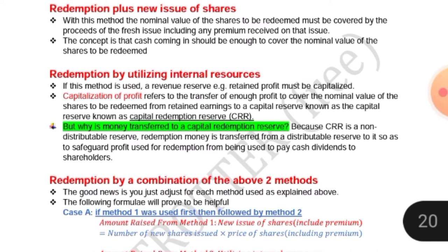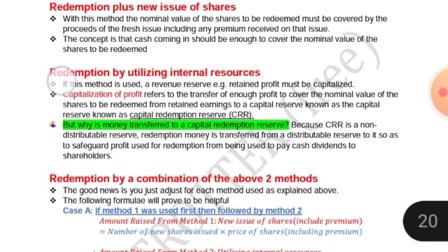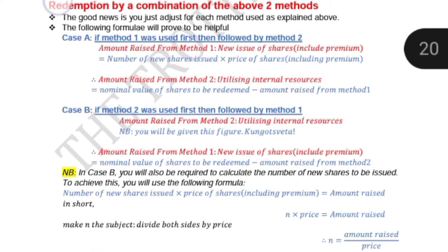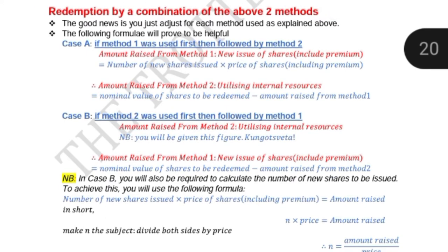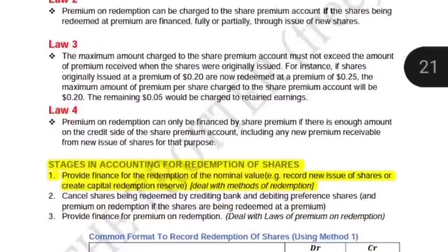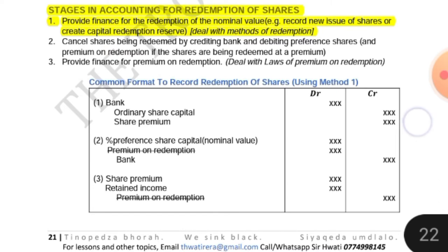The general entries if method one is used will be slightly different from the general entries required when method two is used, and method three is simply a combination of the above two methods. For method one, we debit bank and we credit ordinary share capital and share premium.